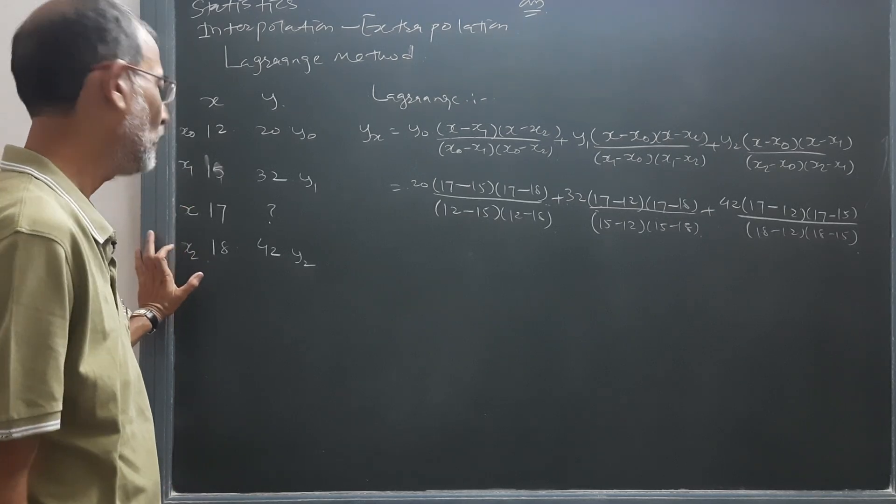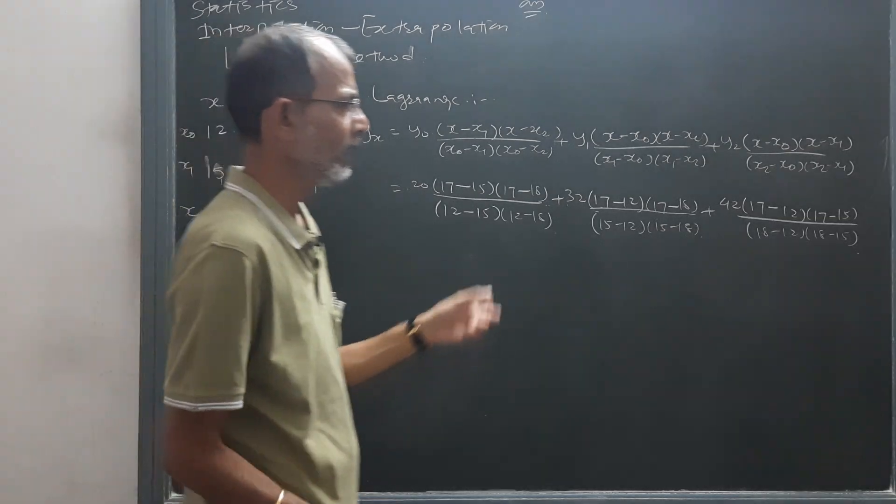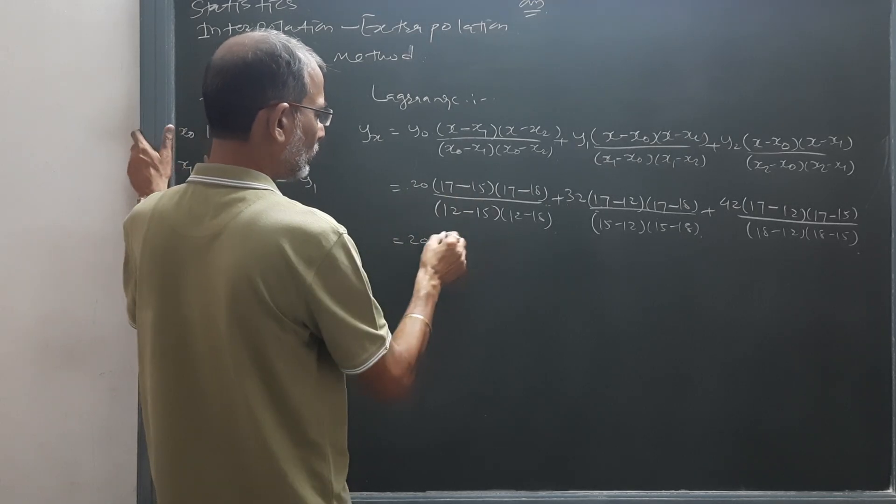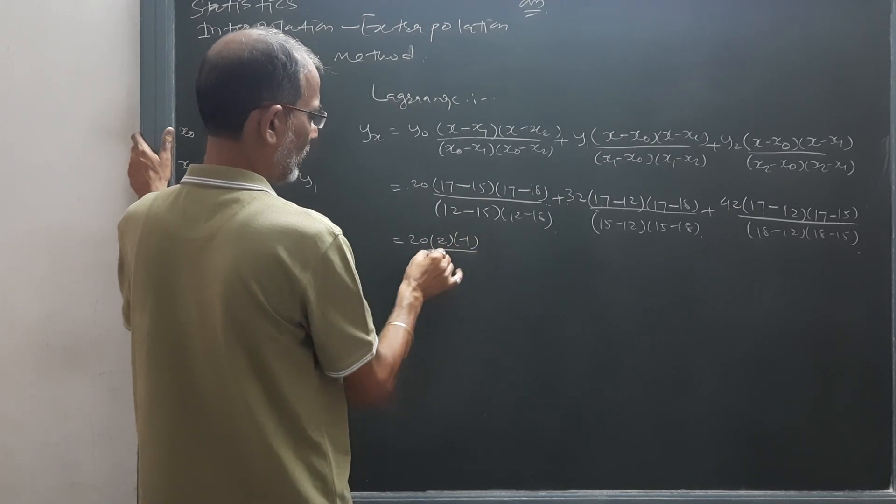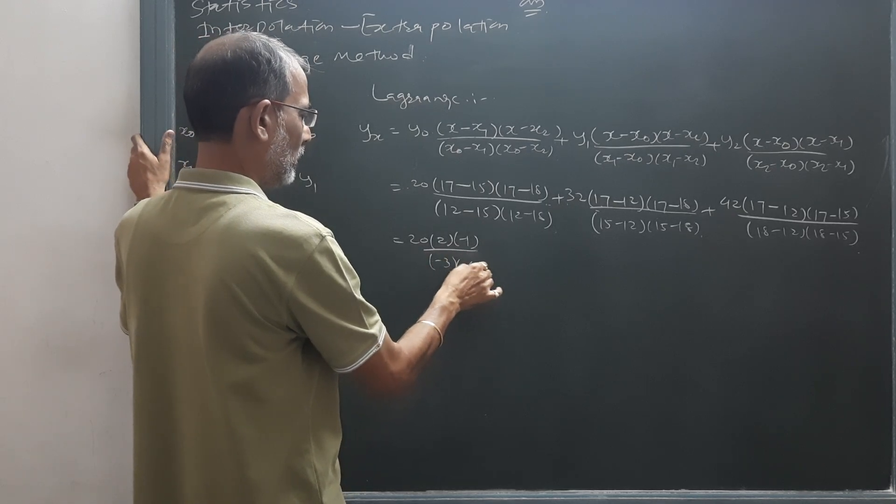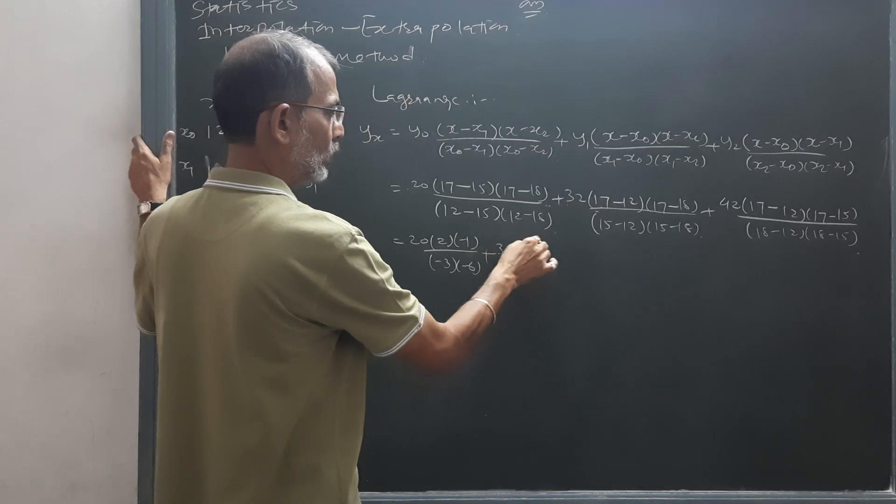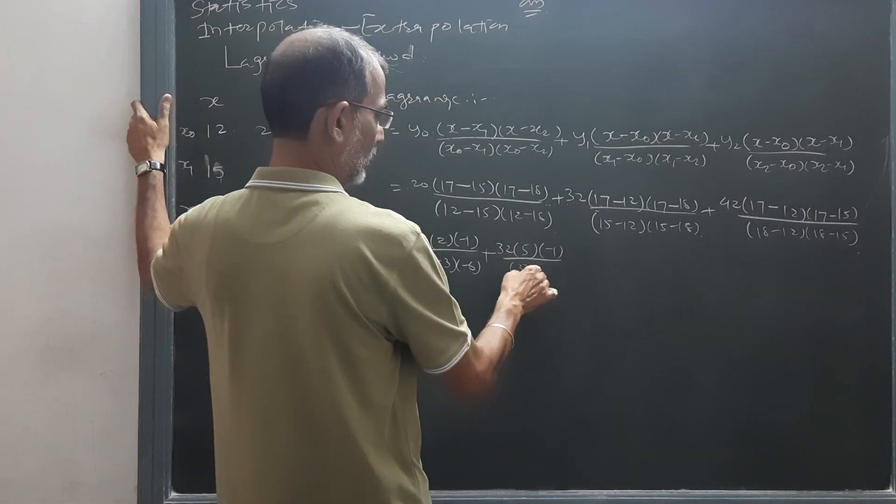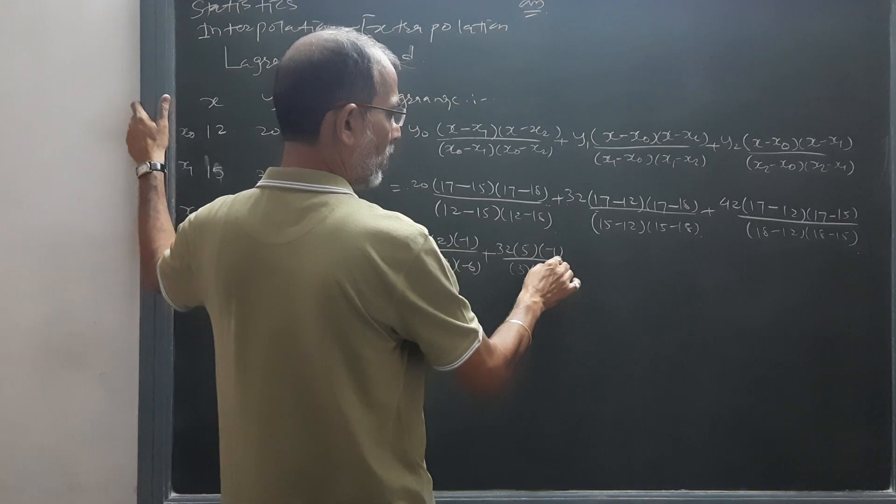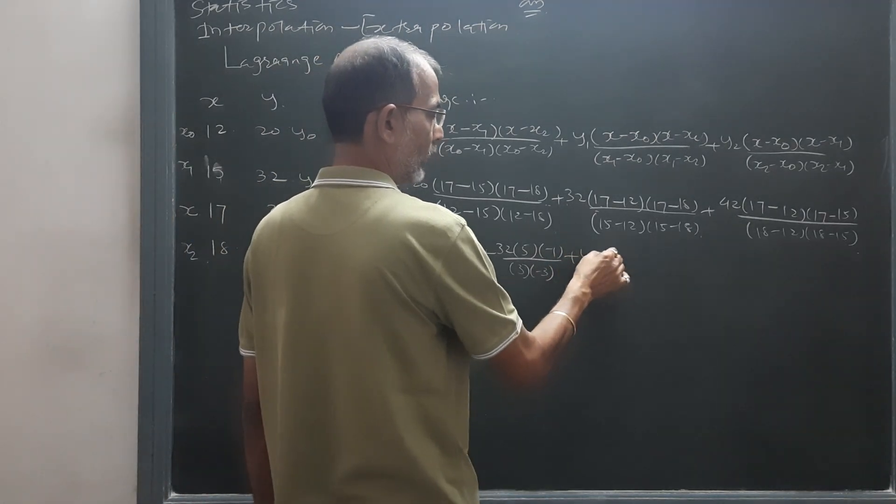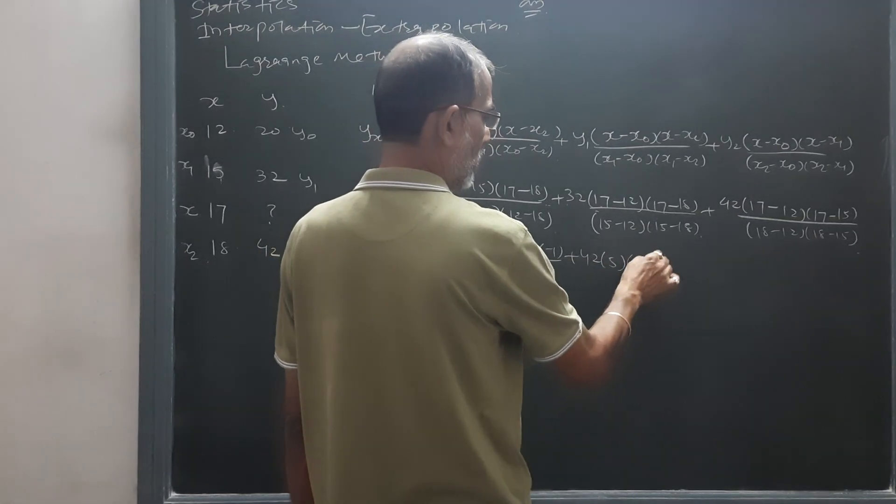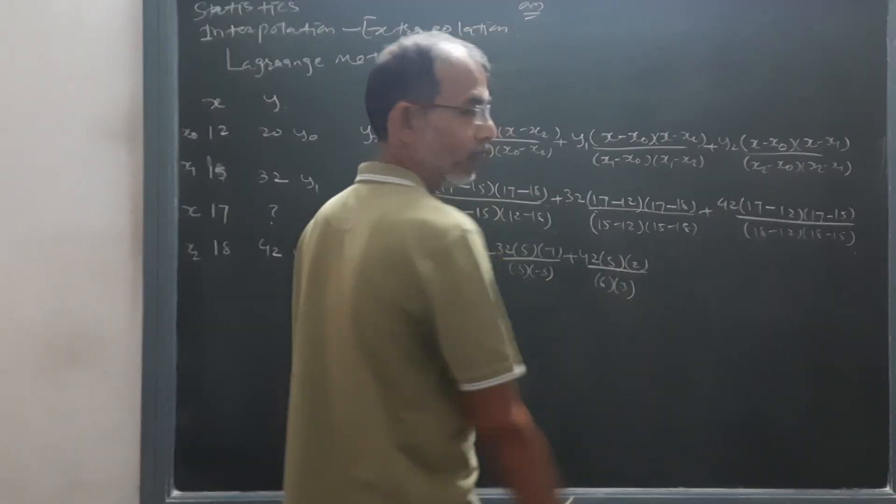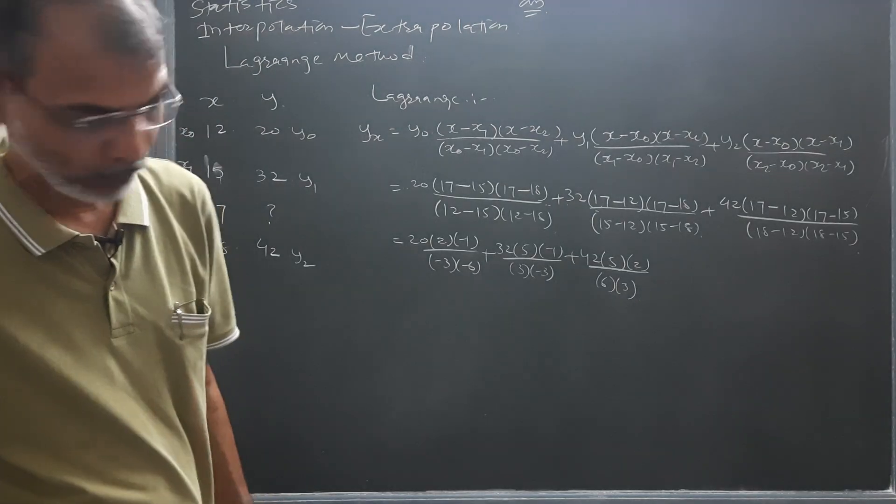Now we will simplify this: 20, 2 minus 3 upon minus 3 minus 6. 32, 5 minus 1 upon 3 minus 3. 42, 5, 2, divided by 6 and 3. Now we will simplify this.